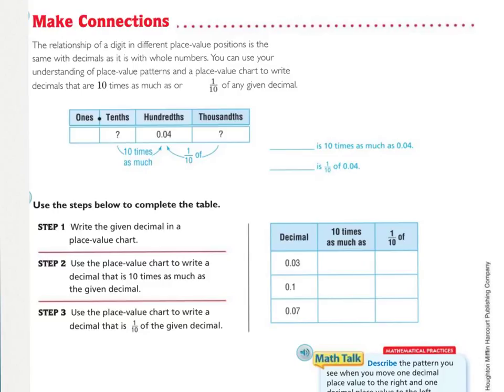So answering these questions right here to the right, using this place value chart right here, we are going to say what is ten times as much as four hundredths? They're asking right here, ten times as much as four hundredths. That is four tenths, which you write as 0.4. And then if you want one-tenth of four hundredths, it's to the right. So this is one-tenth of four hundredths. One decimal place to the right is 0.004 thousandths. So use the steps below to complete the table.